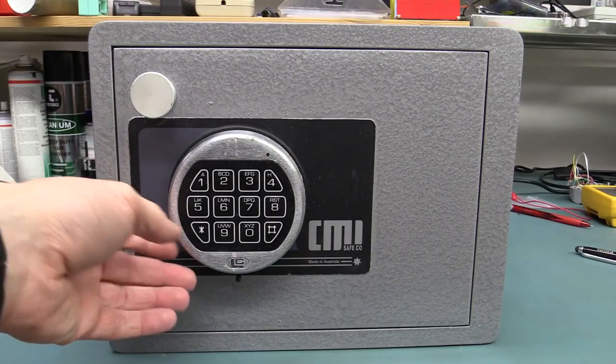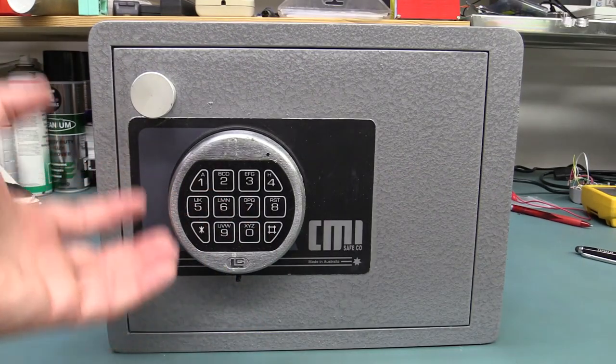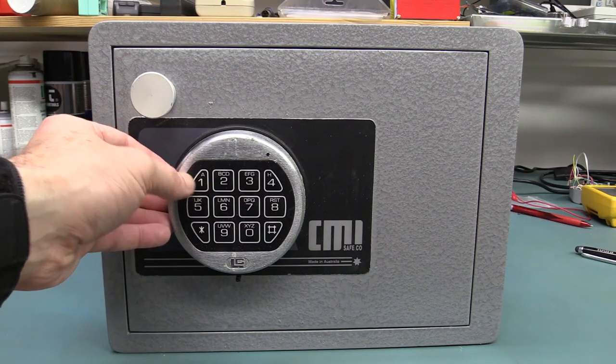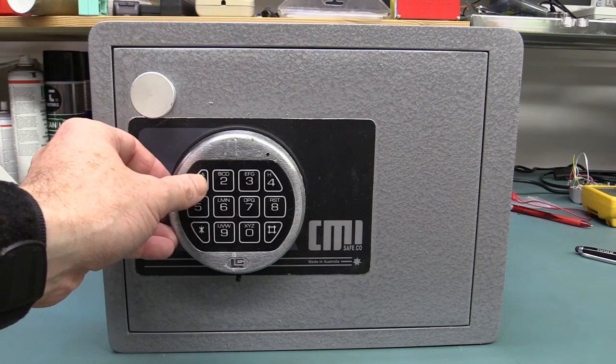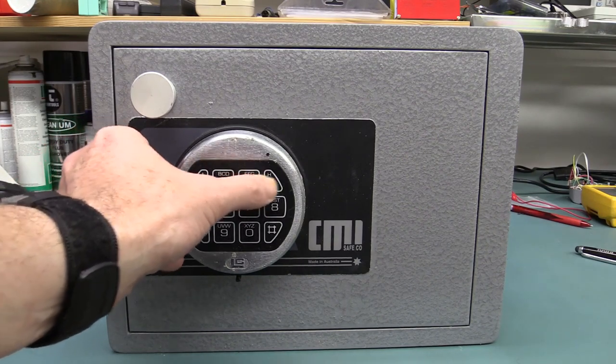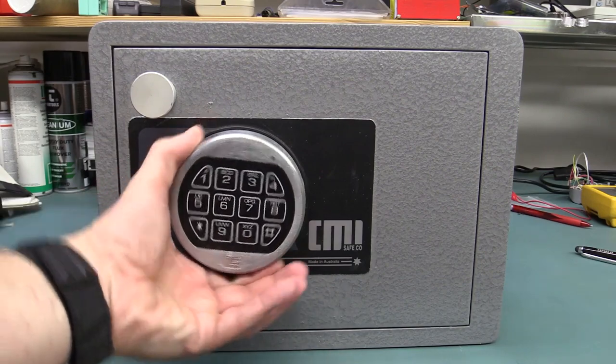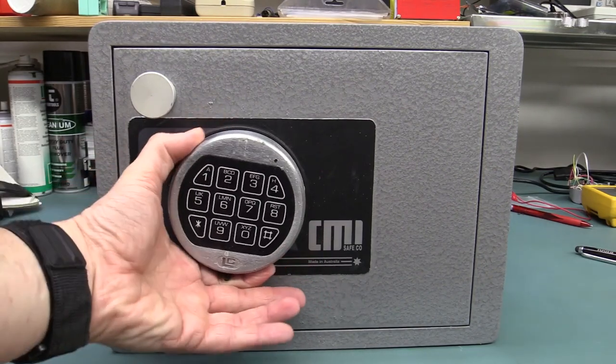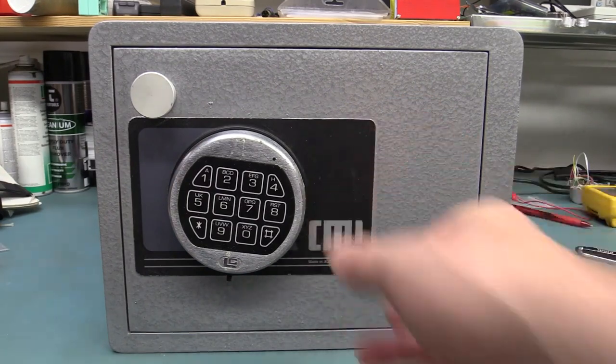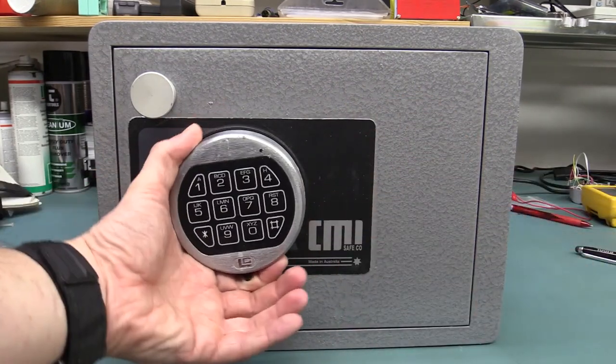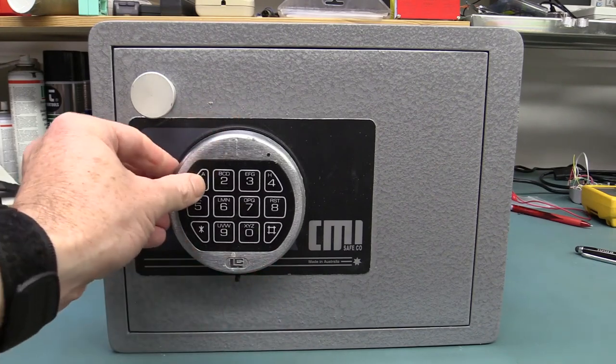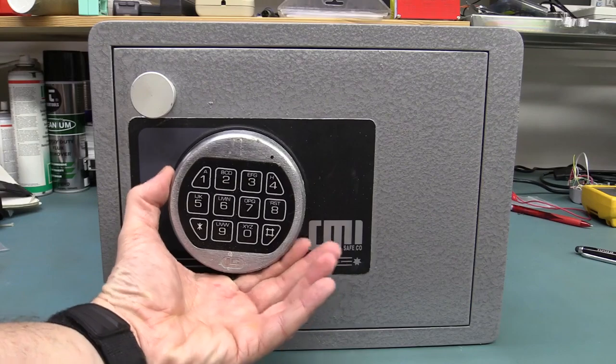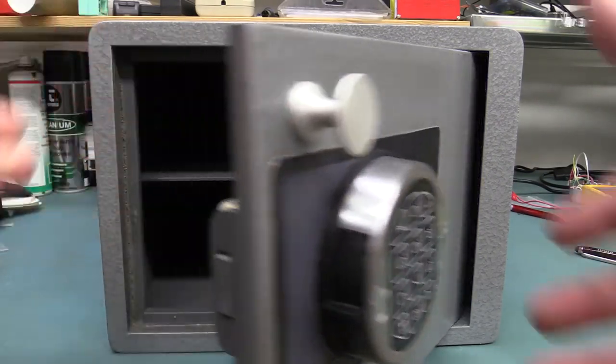So to open one of these, it's a six-digit combination. It must be six digits. You can program it to be any six digits. This one happens to have the original factory code, just one, two, three, four, five. If we actually do it incorrect, you'll see that it beeped at us, flashed the LED. This is actually the handle to turn the thing. So if we go one, two, three, four, five, six. Bingo, you might have heard the solenoid click in place. And we're in like Flynn.